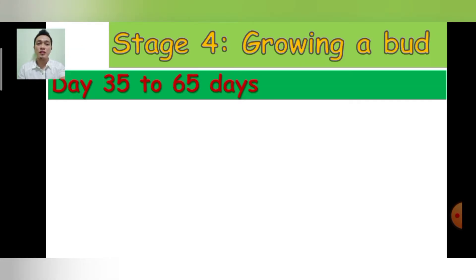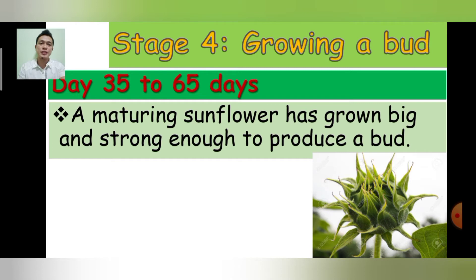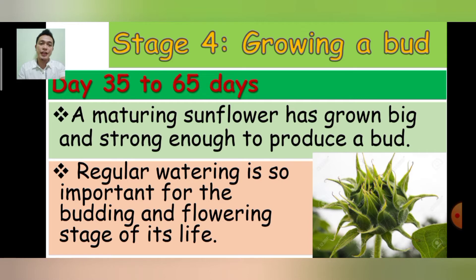Stage 4: Growing a Bud — Day 35 to Day 65. A maturing sunflower has grown big and strong enough to produce a bud. Regular watering is very important for the budding and flowering stage of its life, so you have to water your sunflower regularly in order for it to survive.